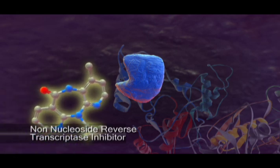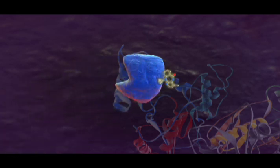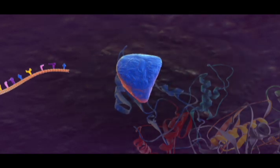Non-nucleoside reverse transcriptase inhibitors bind to a hydrophobic pocket in the reverse transcriptase structure, changing the conformation of the active site and inhibiting polymerase activity.